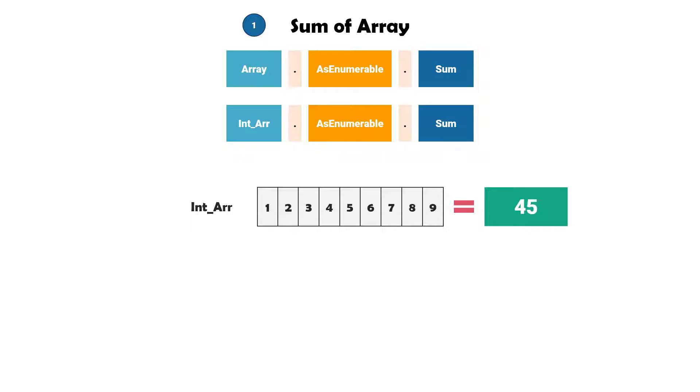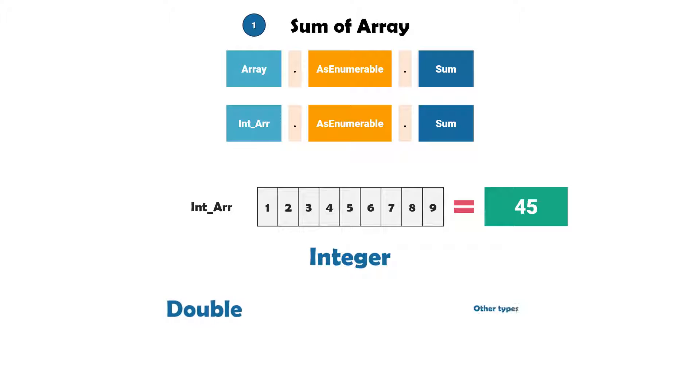As you can see, this array consists of integer numbers, but we can use the same function for a double array or also other number types. Let's implement this example in UiPath.